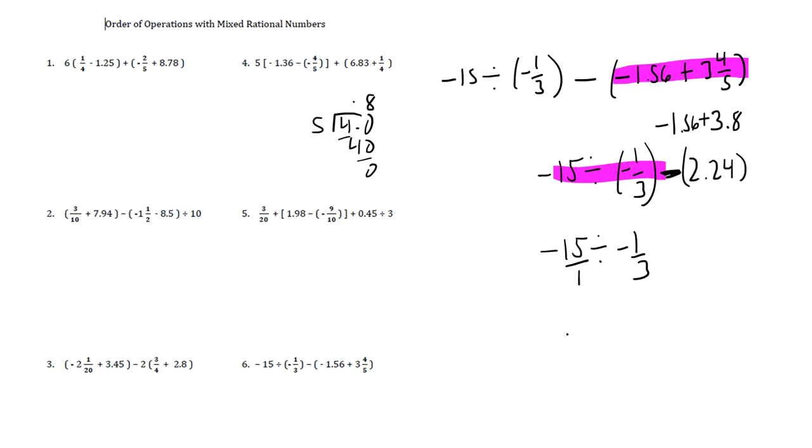So when you do a negative 15 and you divide by a negative one third, this is going to get put over one. And then remember to divide fractions, you keep change flip. So negative 15 over one, change the division to multiplication, flip the second fraction. And now we multiply.